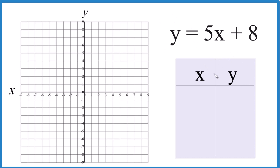Let's start off with 0. If x is 0, then 5 times 0 is 0, plus 8 gives us 8. So that works — it fits on the graph paper.